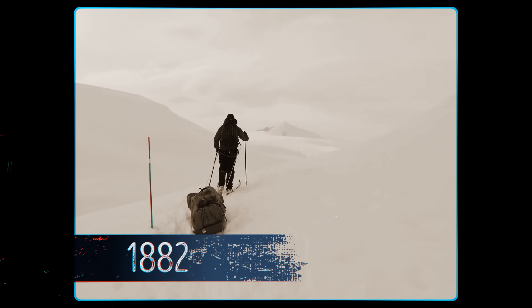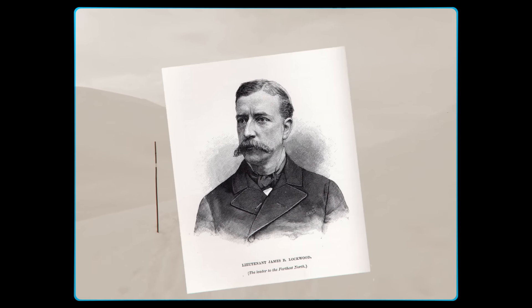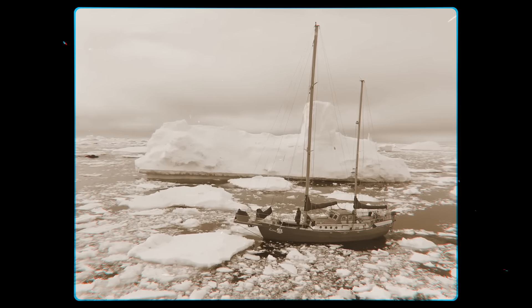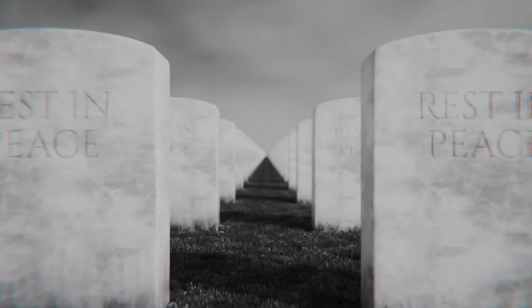In 1882, American explorer James Booth Lockwood managed to get closer to the goal than anyone else. By that time, at least 750 people in 42 expeditions had lost their lives trying to make it to the pole.